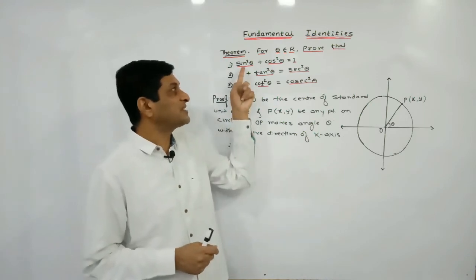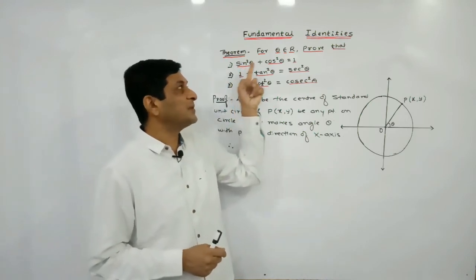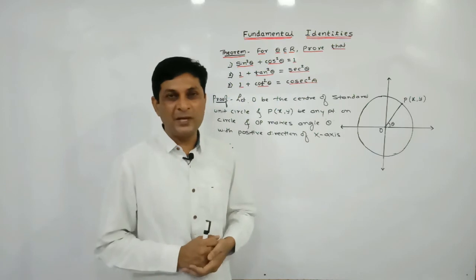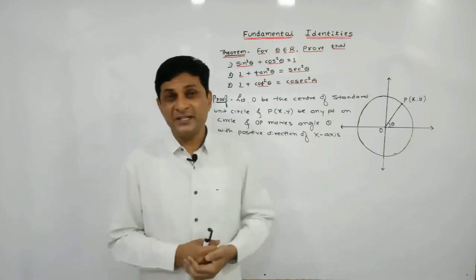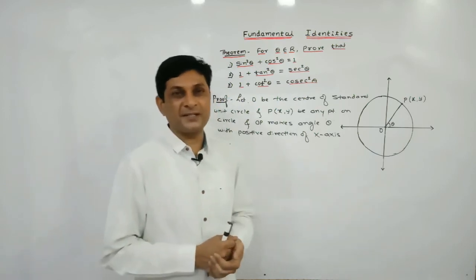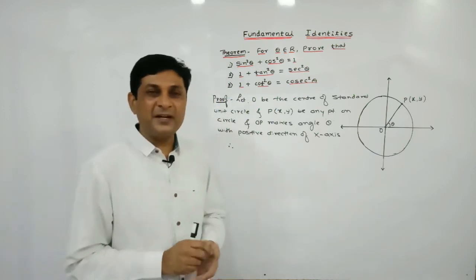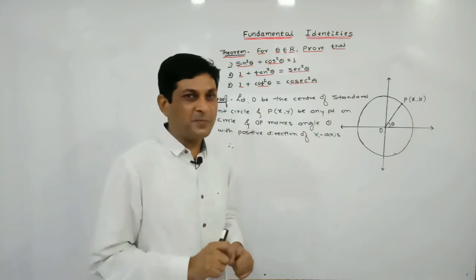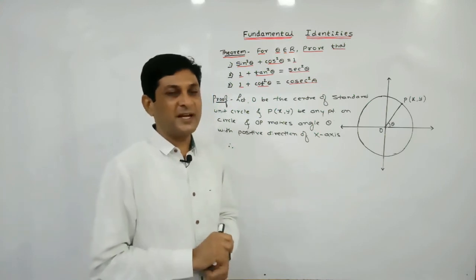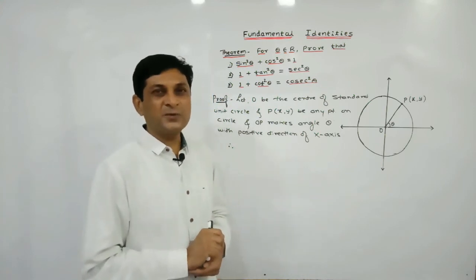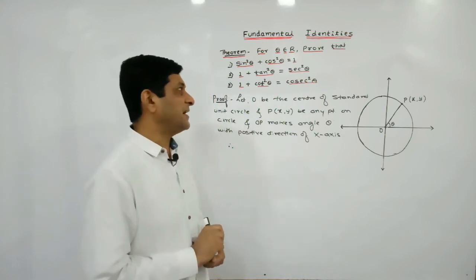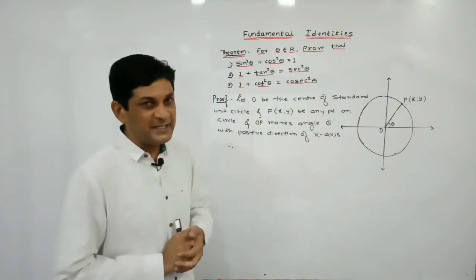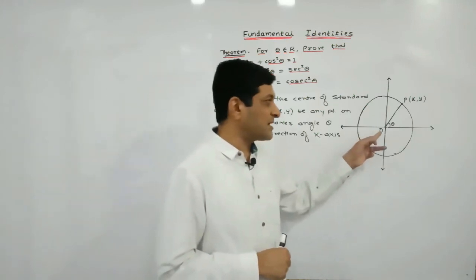Now we are going to prove the fundamental identities. The first identity is: sine squared theta plus cos squared theta is equal to 1. The second identity is: 1 plus tan squared theta is equal to sec squared theta. And the third identity is: 1 plus cot squared theta is equal to cosec squared theta.